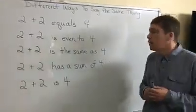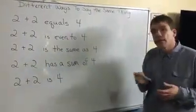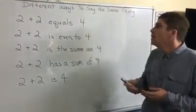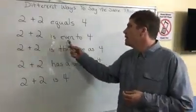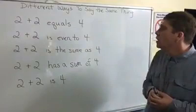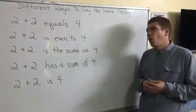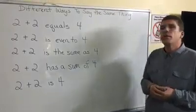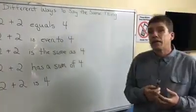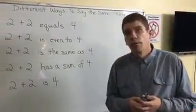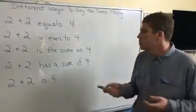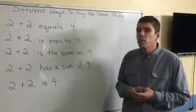Well, I was able to think of at least four other ways to say the same thing. Two plus two is equal to four. Two plus two is the same as four. Two plus two has a sum of four. Or just two plus two is four.